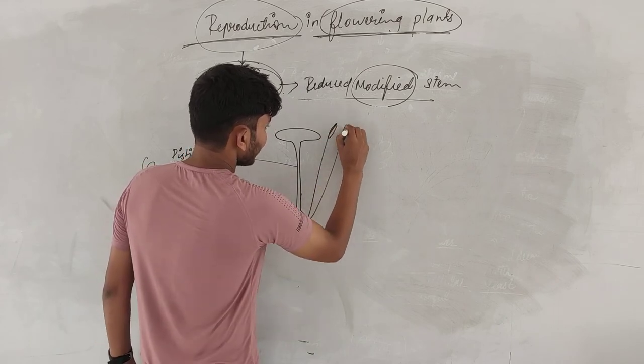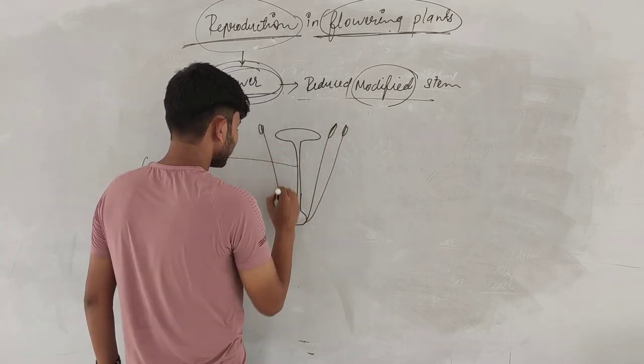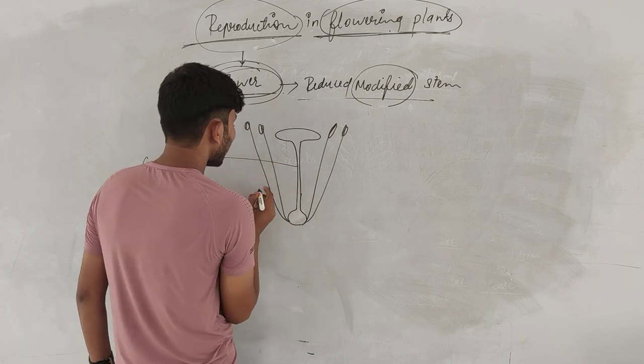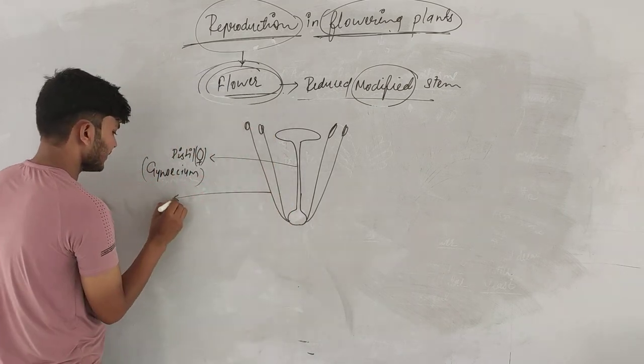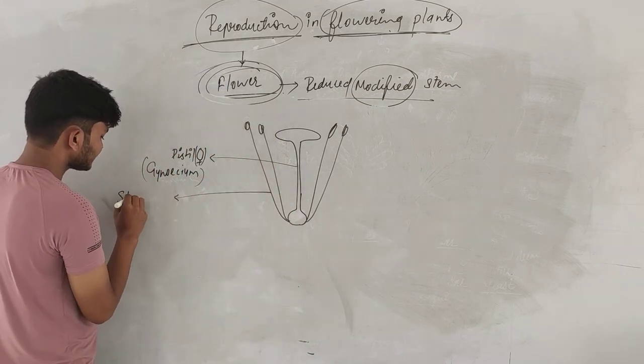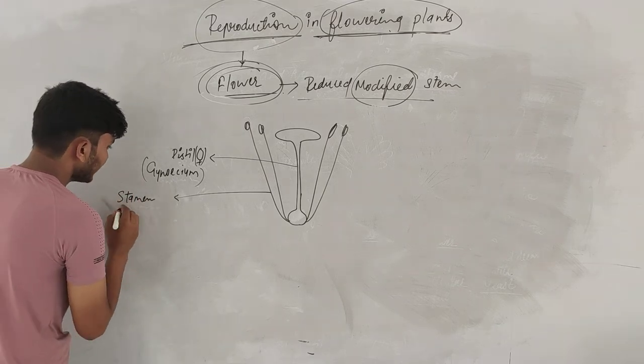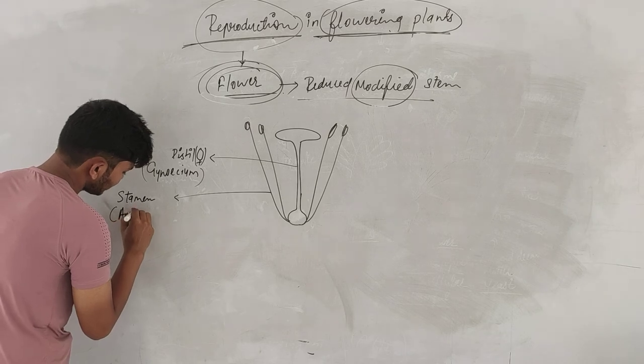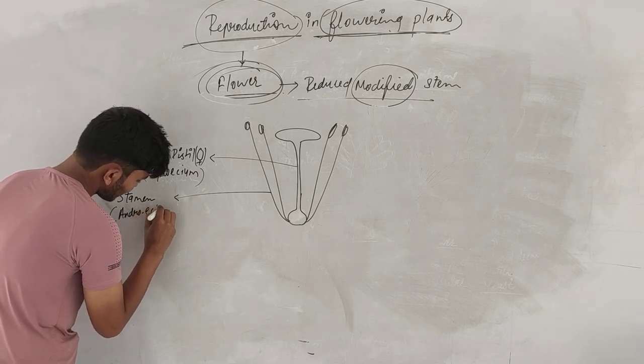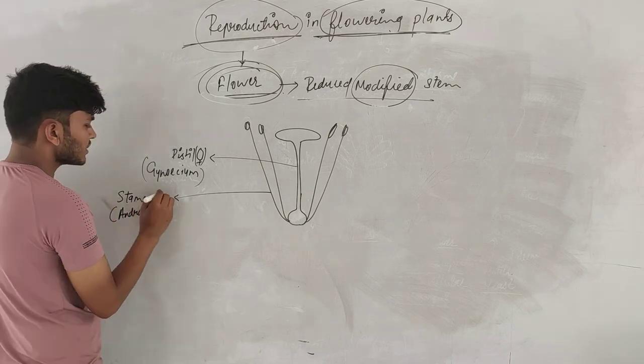This is just from outside. Male part, male reproductive part, that is stamen. What is that? Stamen. Stamen ko bolte hai androecium. It is androecium.